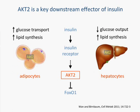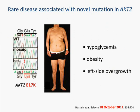In adipocytes, insulin signaling increases glucose transport into those cells and increases their lipid synthesis. Whereas in the liver, insulin signaling typically reduces glucose output from liver cells and again increases lipid synthesis. An identified mutation associated with a very rare disease found a patient with a mutation that changed a single base pair resulting in an amino acid substitution from E to K at the 17th position. This individual exhibited hypoglycemia, obesity, and left-side overgrowth. As noted, this was originally published in October of 2011, and our study took only about a year to follow up on it with genome editing.